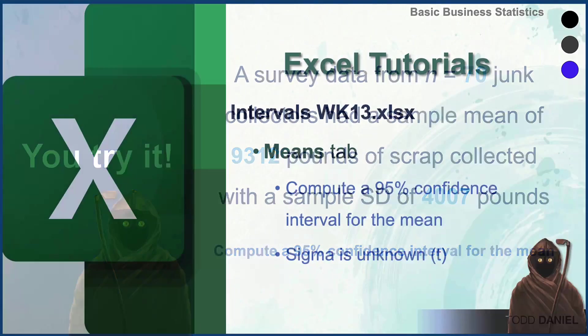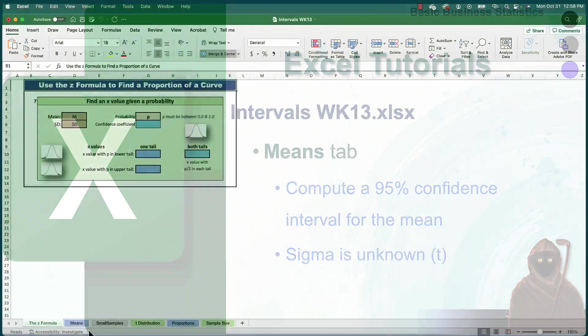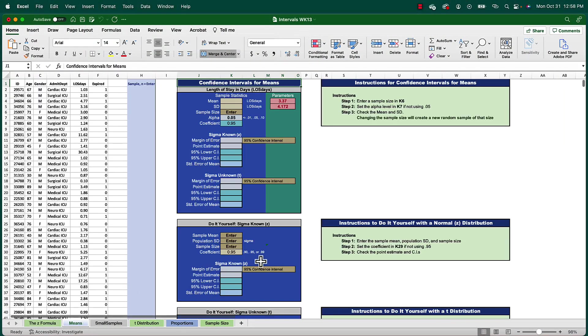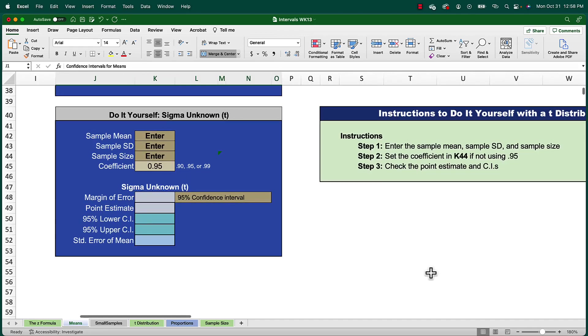Turning to Excel, on our Intervals Week 13 spreadsheet, we're going to look at the Means tab. This will allow us to compute a 95% confidence interval around this mean. This is a circumstance where sigma is unknown, and so we will be estimating using a t distribution. Scroll down until you see the box that says do-it-yourself sigma unknown, or a t distribution.